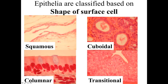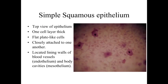The second characteristic is the shape of the surface cell. If they're flat, they're referred to as squamous. If they're cuboidal — box-like with the same height and width — they're cuboidal, like little cubes. If the cells are taller than they are wide, they look like little columns and are columnar. We also have transitional epithelium, where surface cells have rounded nuclei, it's a stratified epithelia, but these cells can stretch and change their shape — so they're transitional in shape.